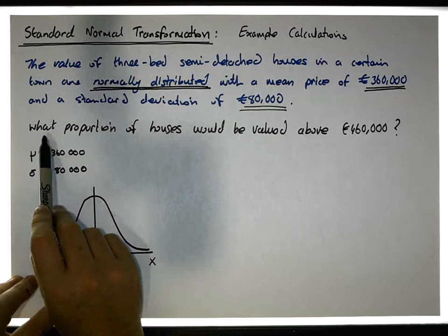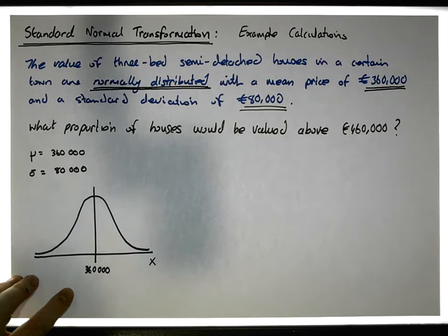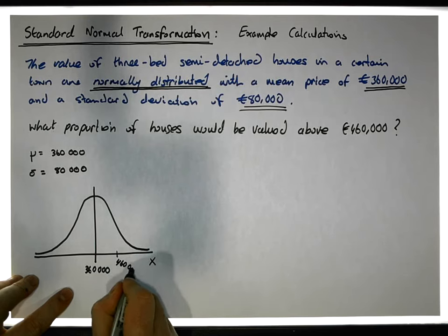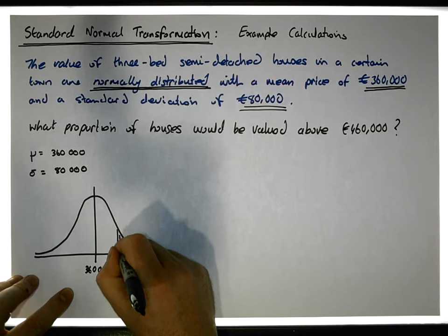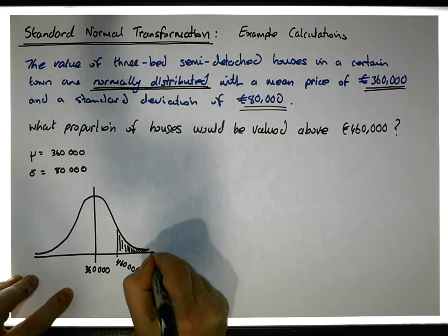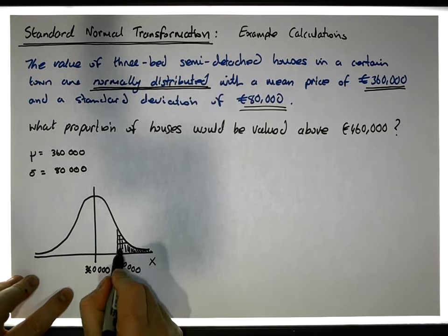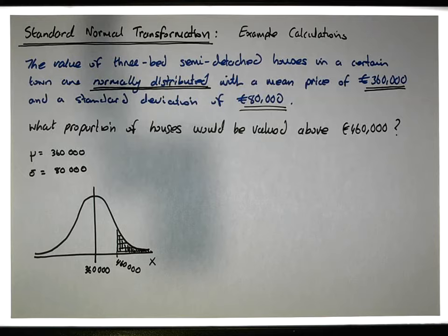We're interested in what proportion of houses would be valued above 460,000 euros. Now 460,000 euros is over here somewhere, maybe here. So we're interested in houses valued above that. In this situation, we're really interested in the houses valued above 460,000 euros, which is this area under the curve to the right-hand side of 460,000 euros.